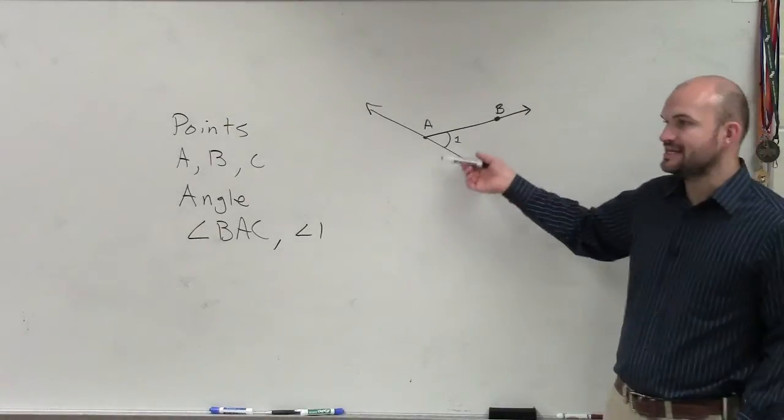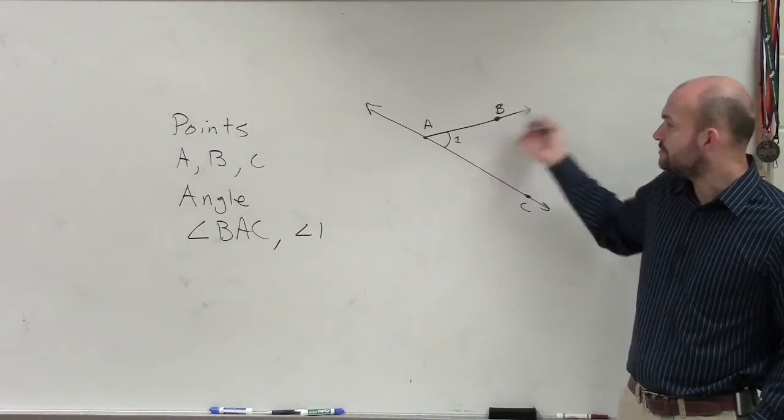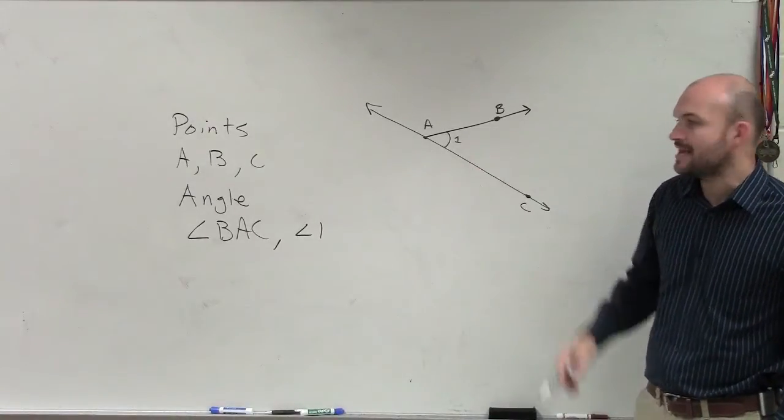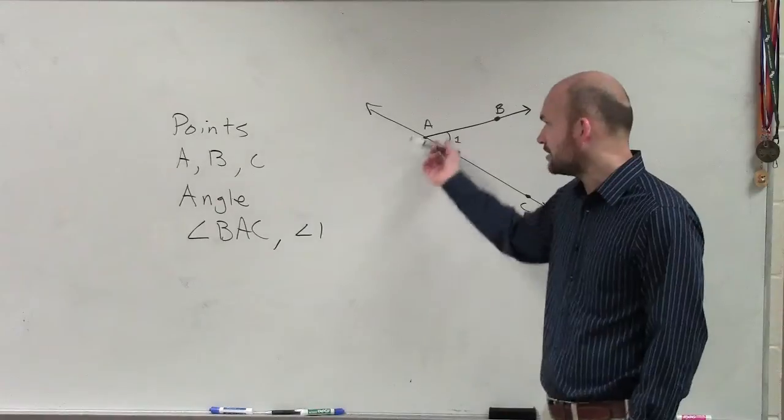So if you're not given this inside, like that previous problem, you have to use the three points. Or other times, we can just label it by the inside and just say angle 1. That means we're talking about that angle.